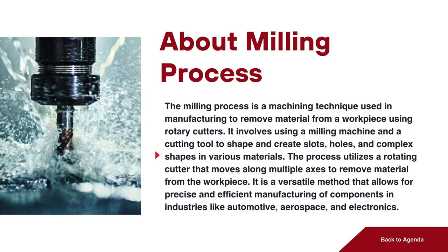What is milling process? The milling process is a machining technique used in manufacturing to remove material from a workpiece using rotary cutters. It involves using a milling machine and a cutting tool to shape and create slots, holes, and complex shapes in various materials. The process utilizes a rotating cutter that moves along multiple axes to remove material. It is a versatile method that allows for precise and efficient manufacturing of components in industries like automotive, aerospace, and electronics.